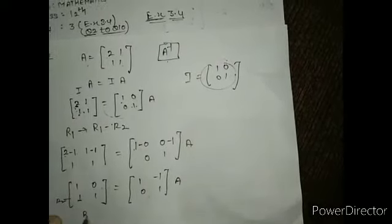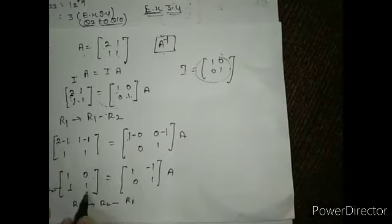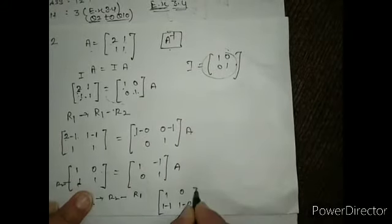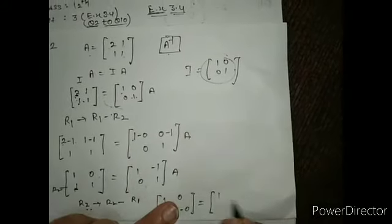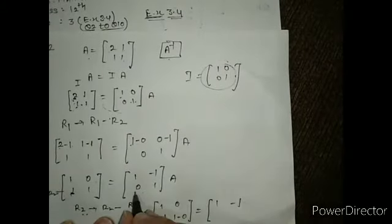What do you need to change in R2? Apply R2 minus R1. If we apply this operation, first R1 remains as it is. In R2, apply 1 minus 1, and 1 minus 0. Same thing, 1 minus 1 as it is. क्योंकि change जो होना है वो R2 में होना है। 0 minus 1, and 1 minus minus 1.